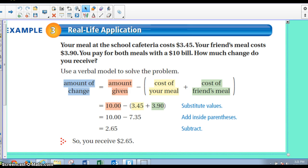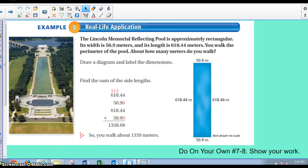And next, let's go to lesson four. Remember, the Lincoln Memorial Reflecting Pool is approximately rectangular. Its width is 50.9 meters. Here's the sample here. And its length is 618.44 meters. You walk the perimeter of the pool. Think about what perimeter is. About how many meters do you walk?